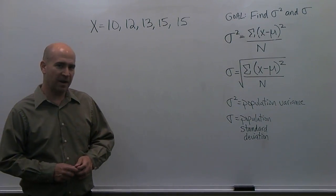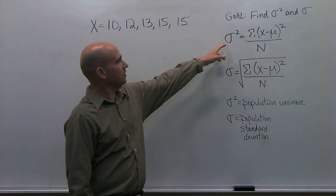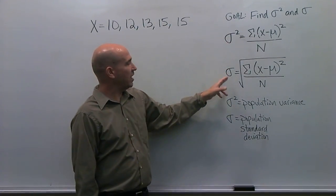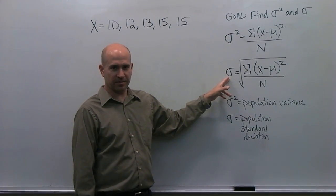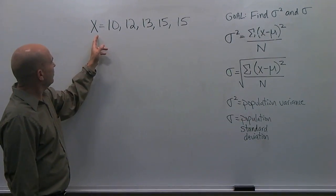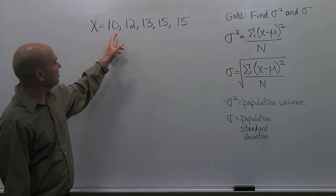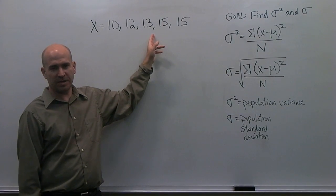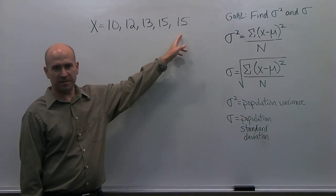In this example, I'm going to show you how to calculate the population variance and the population standard deviation. We have a data set for the variable x, which is equal to 10, 12, 13, 15, and 15.